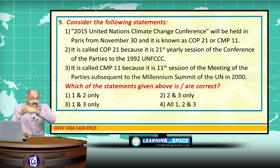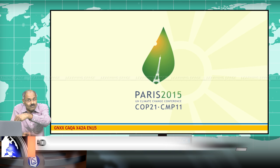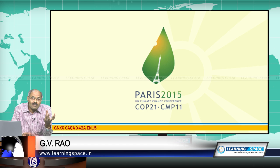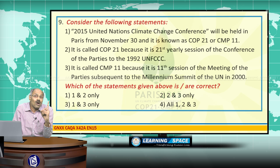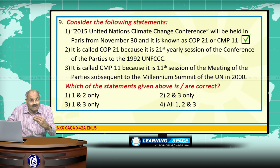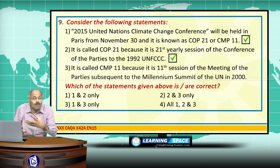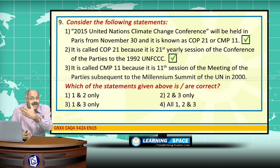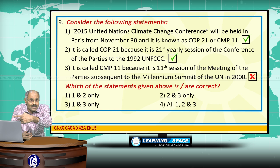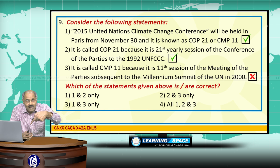The 2015 United Nations Climate Change Conference is going to be held in Paris from November 30 to December 11. This is known as COP 21 or CMP 11. COP 21 is the 21st yearly session of the Conference of the Parties to the 1992 United Nations Framework Convention on Climate Change. It is called CMP 11 because it is the 11th session of the meeting of the parties subsequent to the Kyoto Protocol of 1997 — not the Millennium Summit of 2000. Please correct the third sentence accordingly.